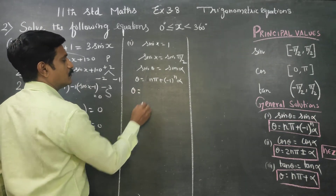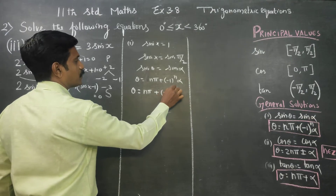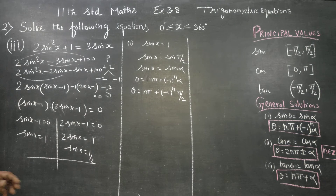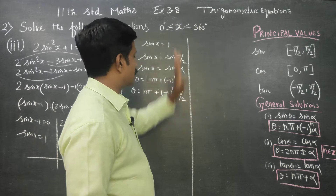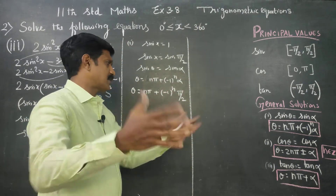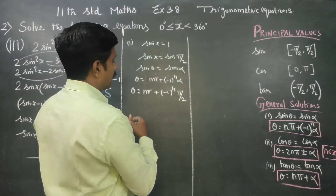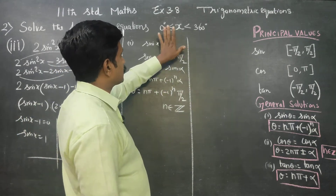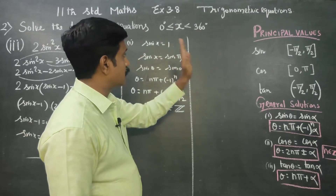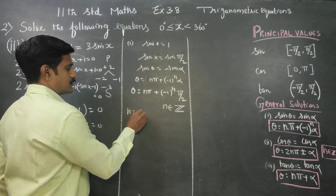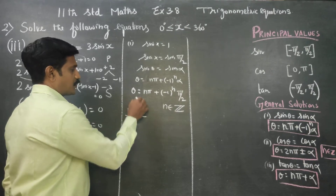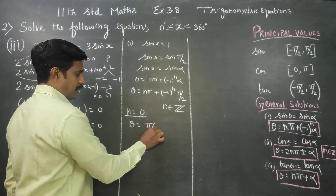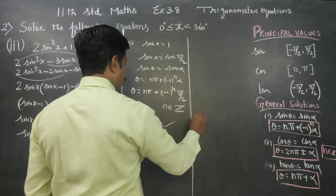Now applying the formula: θ = nπ + (-1)ⁿ × (π/2). This gives lakhs of answers since n belongs to integers. Try n = 0: θ = 0 + (-1)⁰ × (π/2) = π/2. Pi by 2 is within the allowed range, so this answer is accepted.